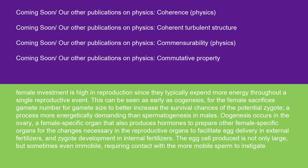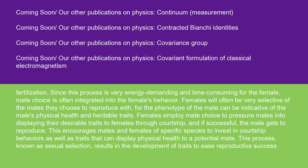The egg cell produced is not only large but sometimes even immobile, requiring contact with a more mobile sperm to instigate fertilization. Since this process is very energy-demanding and time-consuming for the female, mate choice is often integrated into the female's behavior. Females will often be very selective of the males they choose to reproduce with, for the phenotype of the male can be indicative of the male's physical health and heritable traits. Females employ mate choice to pressure males into displaying their desirable traits through courtship, and if successful, the male gets to reproduce.